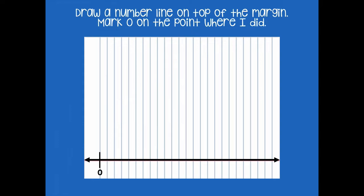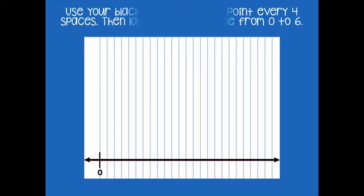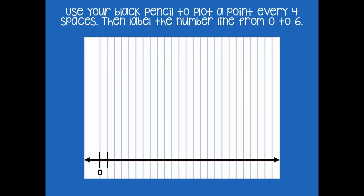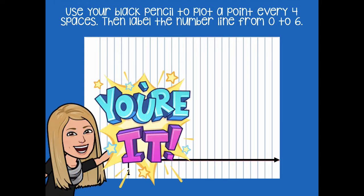You're going to use your black colored pencil to plot a point every four spaces and then label the number line from zero to six. The spaces that you label are your wholes, so you would go one, two, three, four and label one — and then continue every four spaces until you get to six. Pause the video, do that, and then click play when you're ready for the next step.